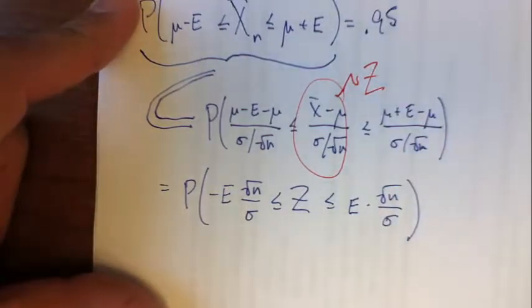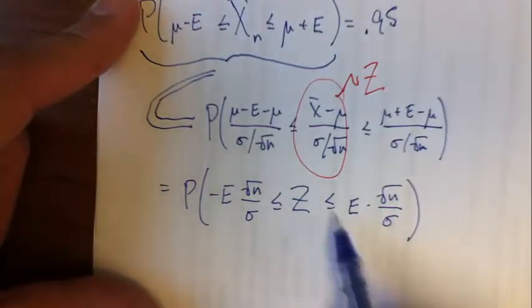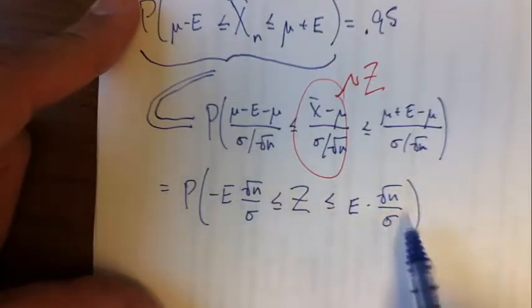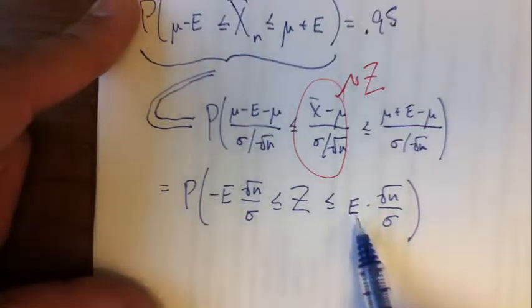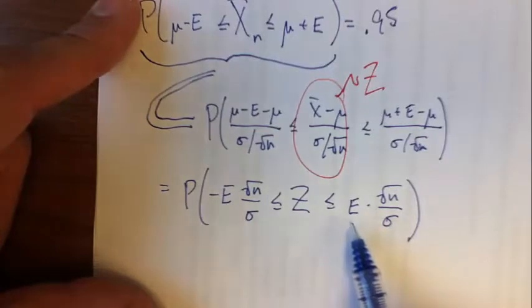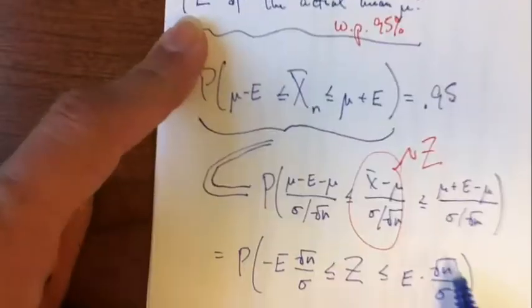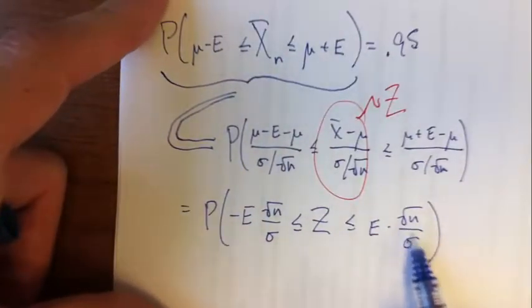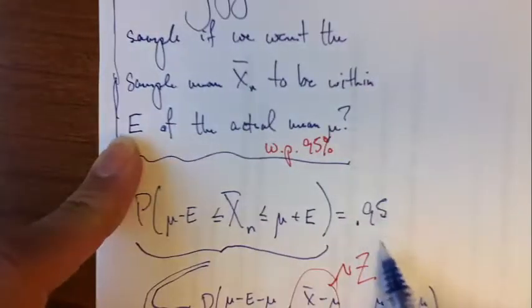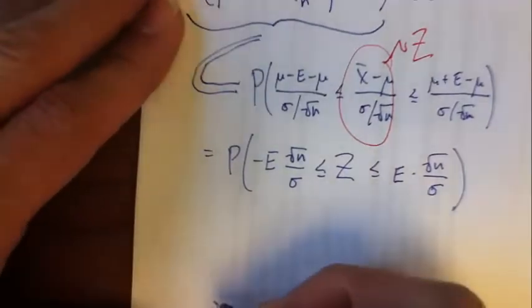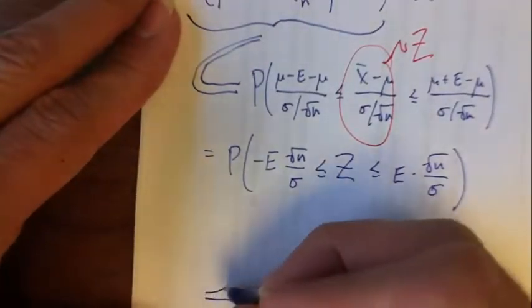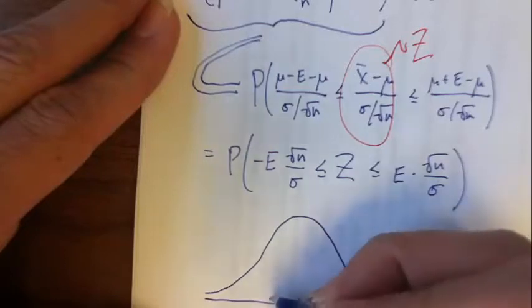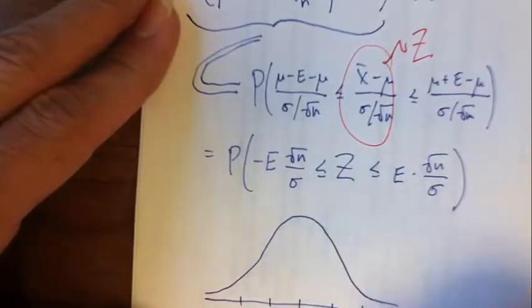Now, so look at what we have here. I want to know the chance that the standard normal falls between these two marks. I'm given this e number, or we would be in the problem, and the standard deviation I know from the problem. We're trying to find n, all of this stuff is equal to .95. Well, so at this point, I'm going to draw a picture.